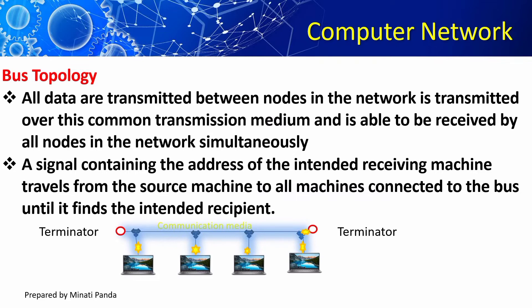The data will be received by all the nodes in the network simultaneously. A signal will contain the address of the intended receiving machine and travels from the source machine to all machines connected to the bus until it finds the intended recipient.